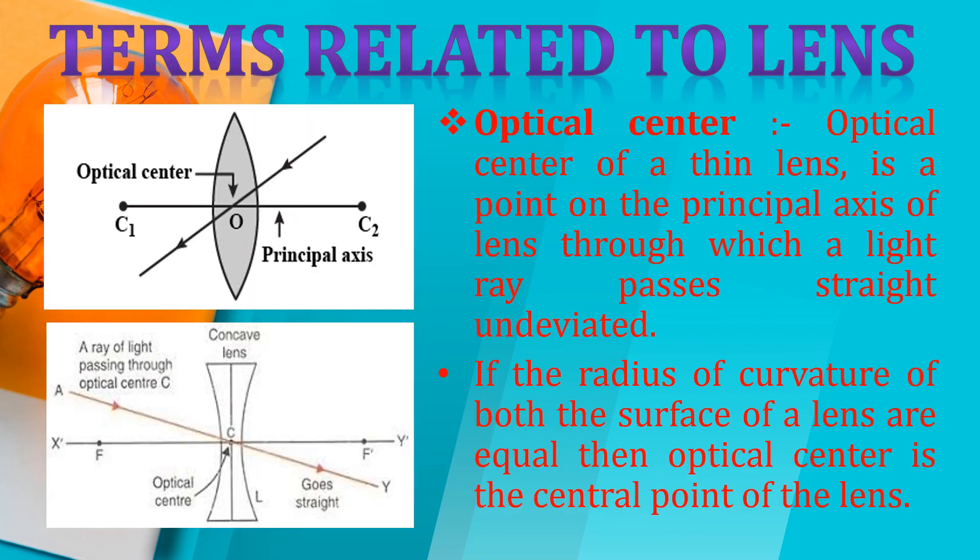Remember that the convex lens is a converging lens and the concave lens is a diverging lens. Now let us know about the terms related to the lens. The nature of the lens is converging and diverging. We will now study some terms related to the lens. Optical center is a middle point. Optical center of a thin lens is the point on the principal axis through which the light ray passes straight and undeviated.